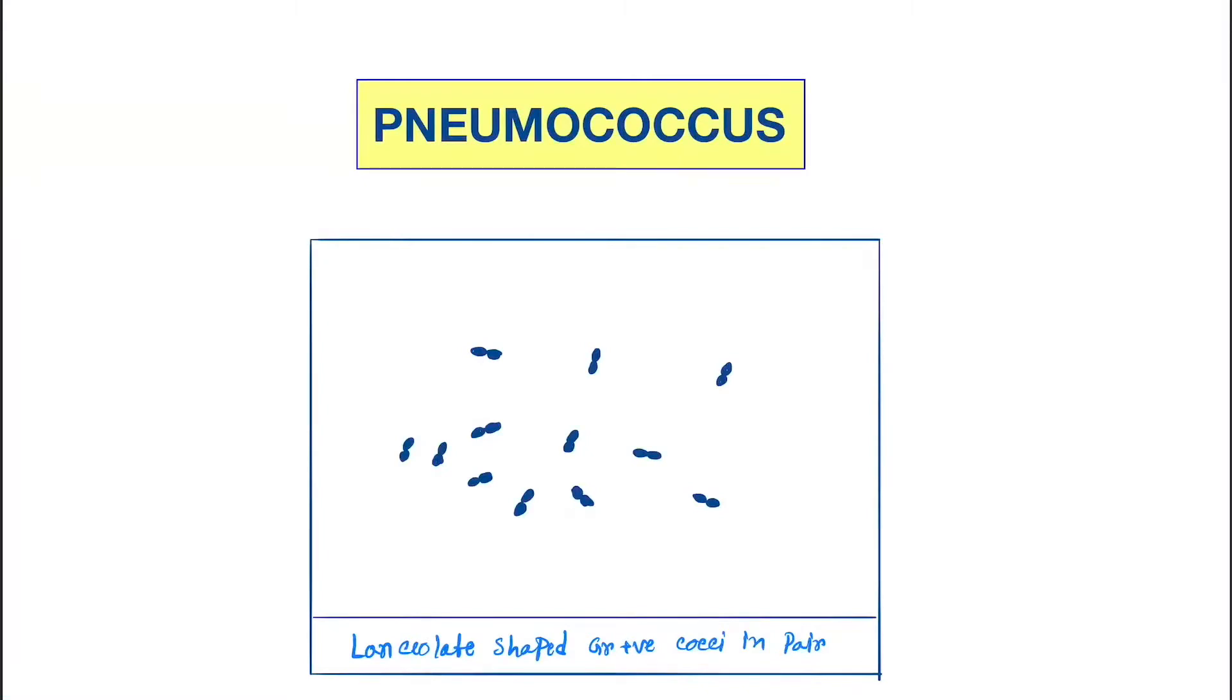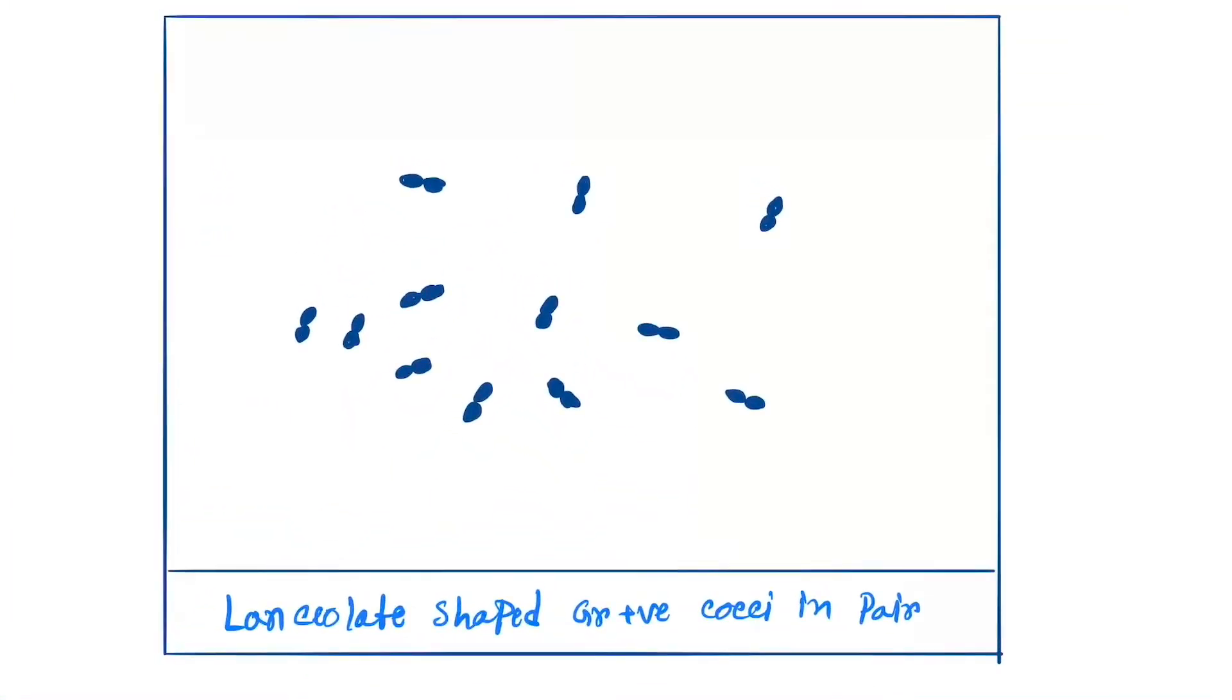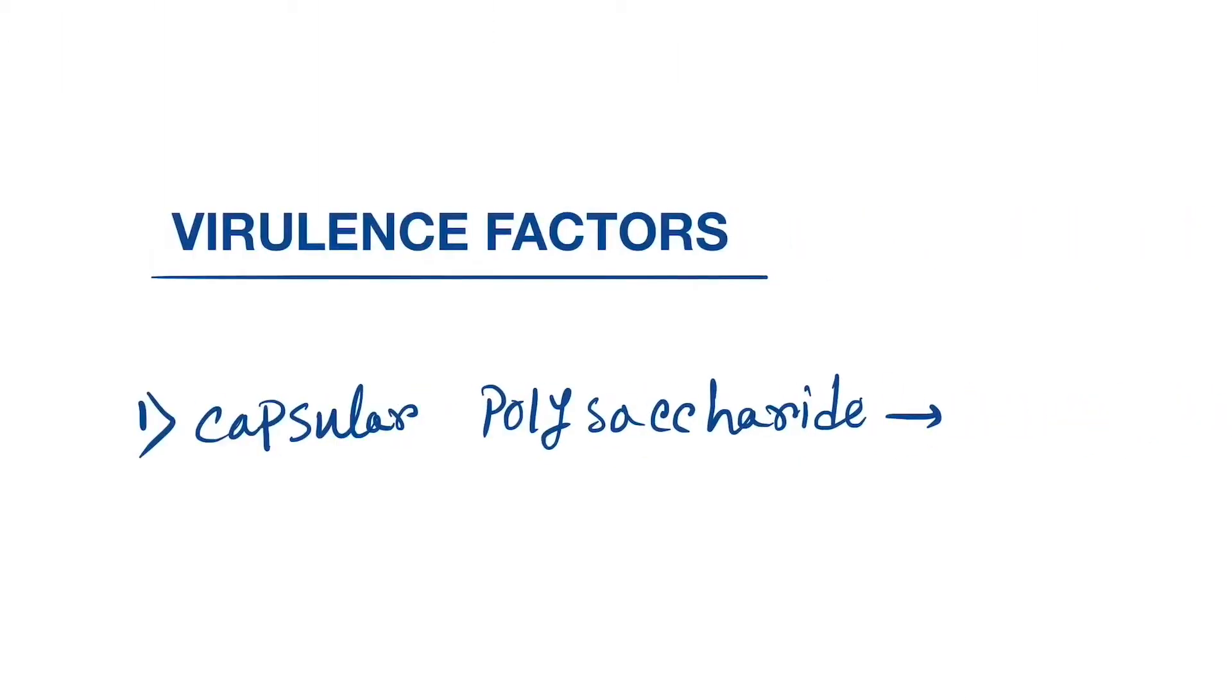Okay, so today our topic is the pneumococcus, Streptococcus pneumoniae. If we do the gram stain, we will see a lanceolate shaped, gram-positive cocci in pairs. Remember, here also in pairs, not single. Previously there was the Enterococcus which was in pairs but spherical shaped, but here it's lanceolate shaped.